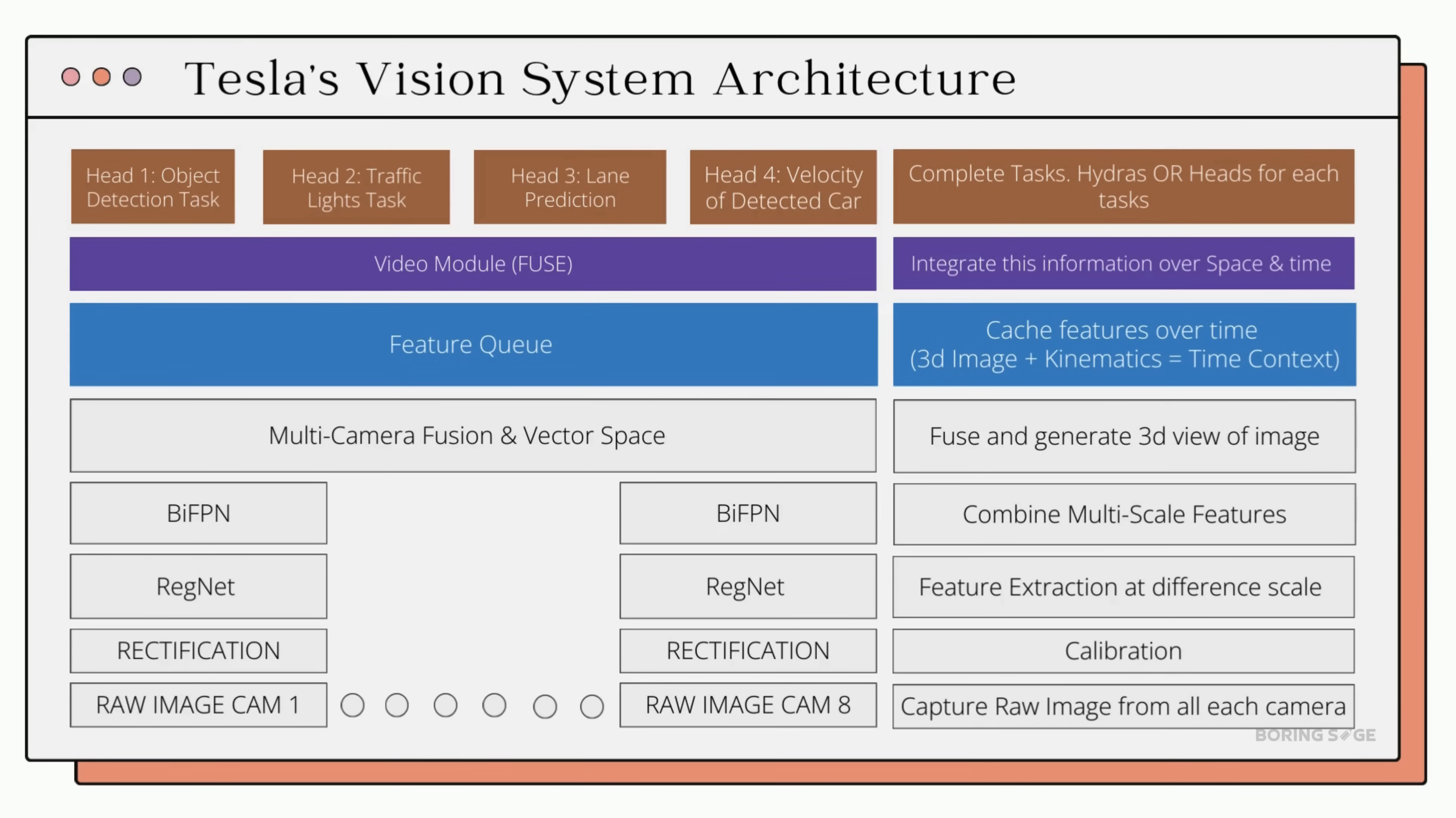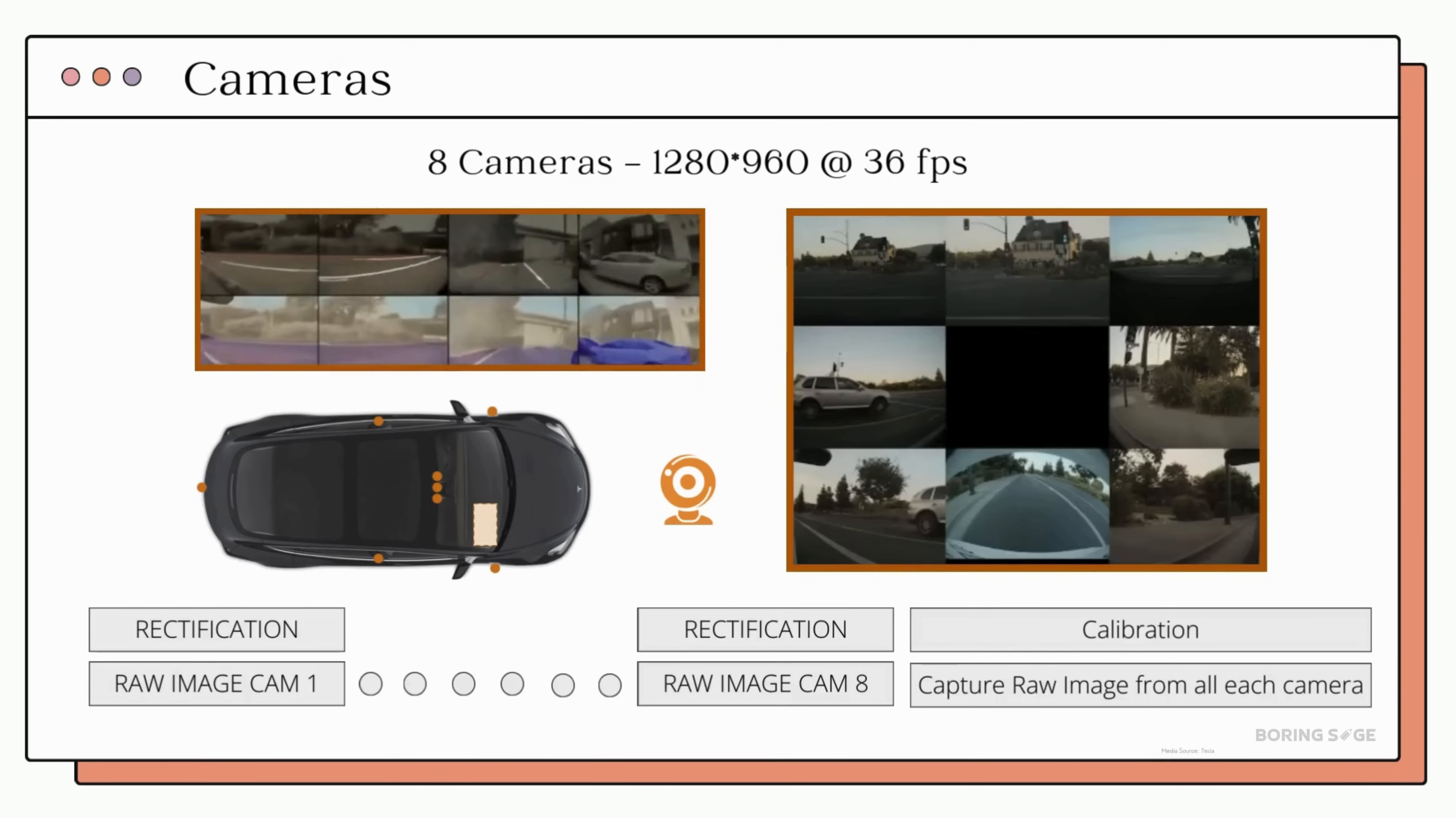Let's break down how this architecture works step-by-step, starting from the bottom layer of the 8 camera feeds. Tesla uses 8 cameras strategically placed around the vehicle to capture high-definition video streams at 1280x960 resolution with 12-bit HDR at 36 frames per second.